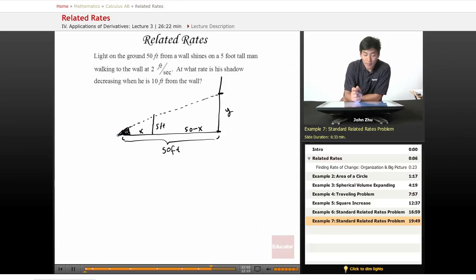To relate all these variables together, we see that this is a similar triangle inside an even bigger one. So 5 over y equals x over 50 minus x.